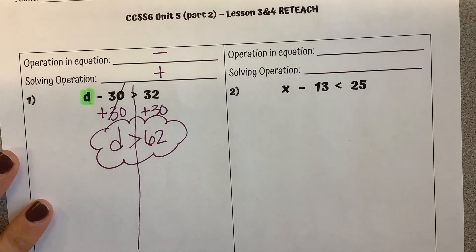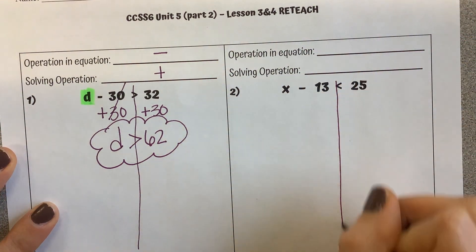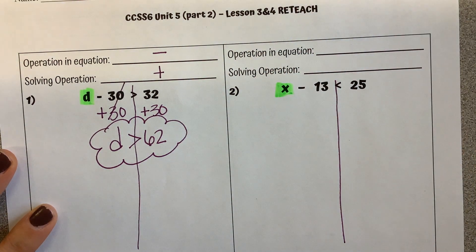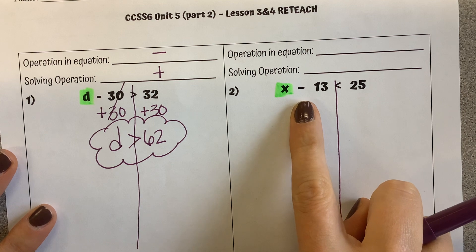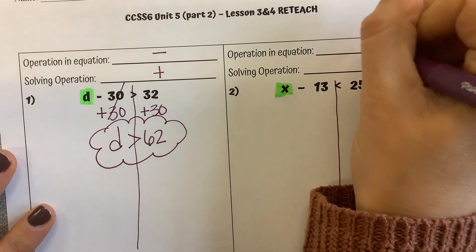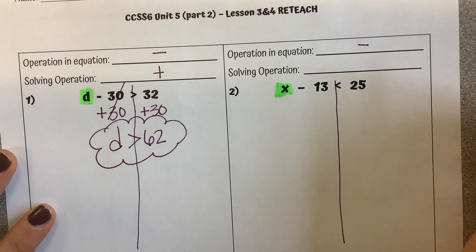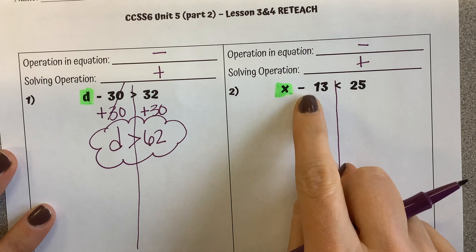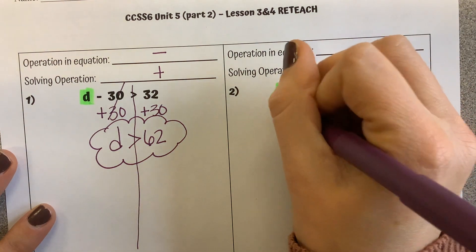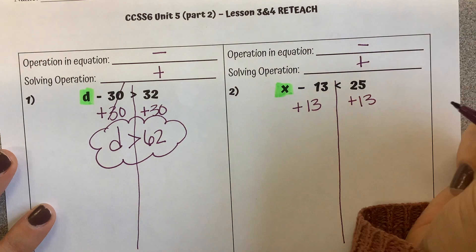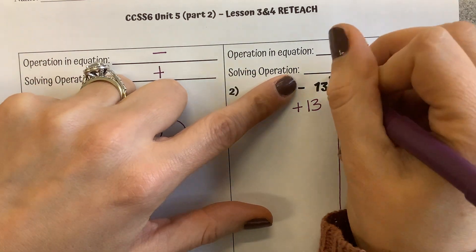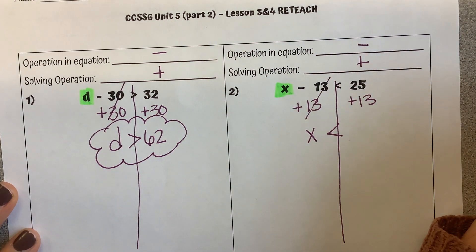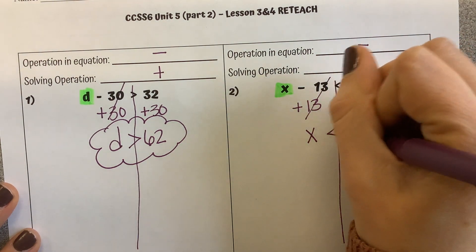Number two. Putting my line down my inequality symbol, highlighting my variable. On the side with the variable, the operation I see is subtraction, so we're using the opposite to solve — we're going to add. The number with X that we're subtracting is 13, so the opposite is to add 13 to both sides. The 13s cancel each other out, we're left with X. Bring down the inequality symbol. 25 plus 13 is 38.